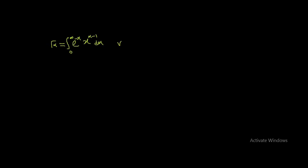This is our general expression for the gamma function, valid for all alpha greater than zero. That means your alpha value has to be 1, 2, and so on. This is the formula for the gamma function.